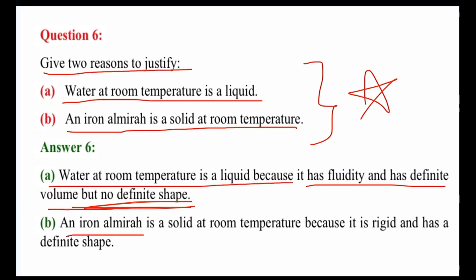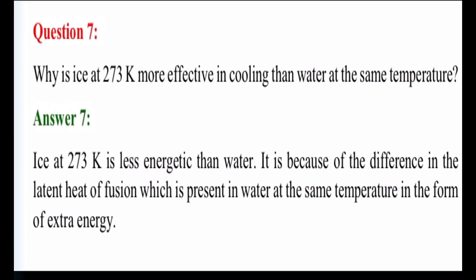Part B, an iron almirah is a solid at room temperature because it is rigid and has a definite shape. Iron almirah is a solid at room temperature because melting point of iron is higher than room temperature and that is why it is in a solid state.